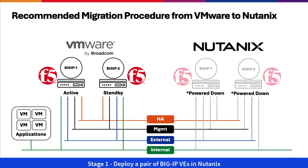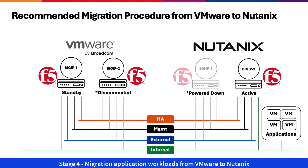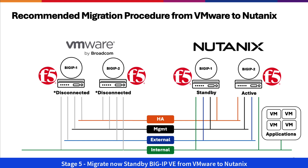The recommended migration procedure can be summarized in five stages. In Stage 1, we'll deploy a pair of BigIP VEs in Nutanix. In Stage 2, we'll migrate the standby BigIP VE from VMware to Nutanix. In Stage 3, we'll failover the active BigIP. In Stage 4, we'll migrate our application workloads. Finally, in Stage 5, we'll migrate the now standby BigIP VE, completing the migration from VMware to Nutanix.